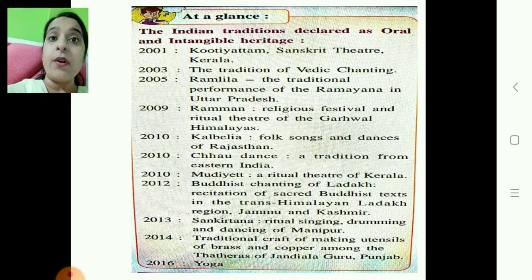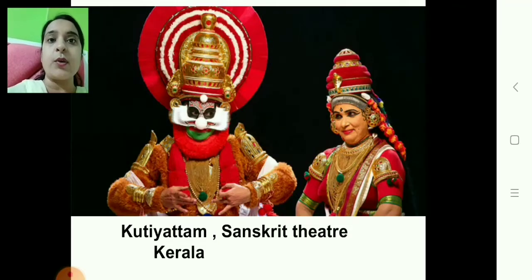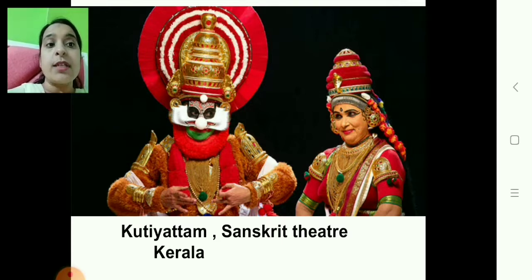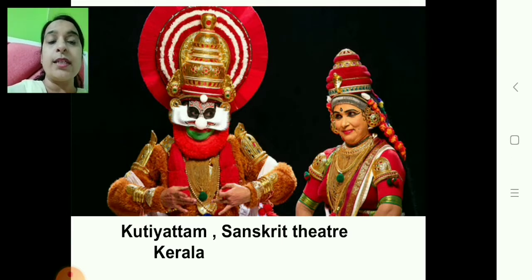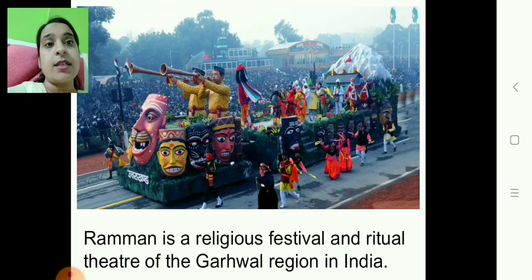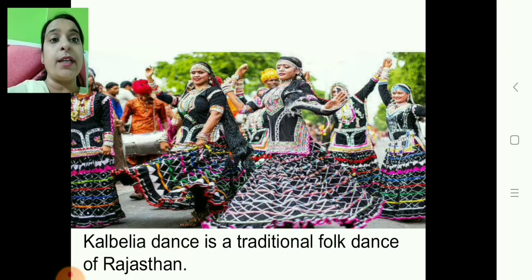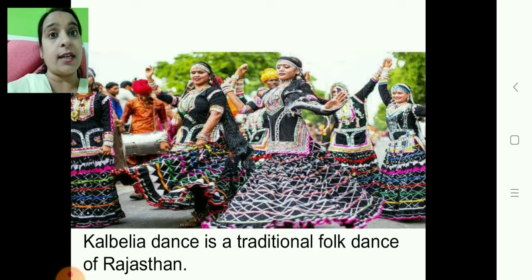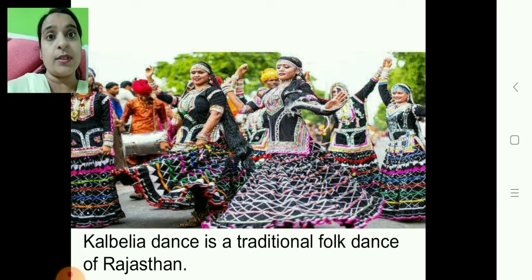You have to remember all of these very carefully. Just have a look at these pictures. Kutiyattam is the Sanskrit theater of Kerala — note that in the textbook it is spelled differently but you write what is given in the textbook only. Then Raman — it's a religious festival and ritual theater of the Garhwal region. Then Kalbeliya dance, a traditional folk dance of Rajasthan — see how colorful the costumes are.